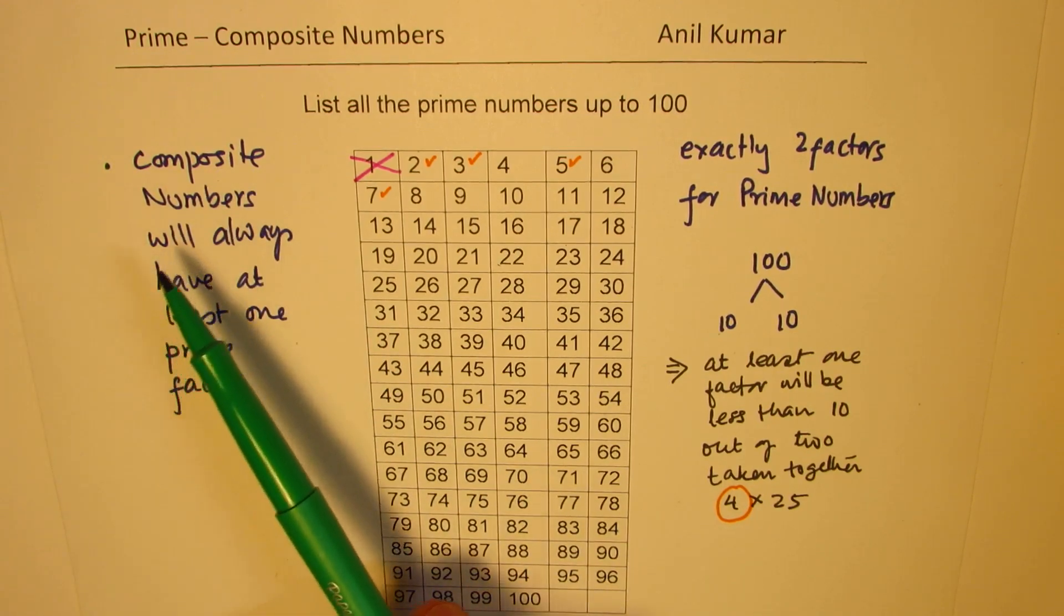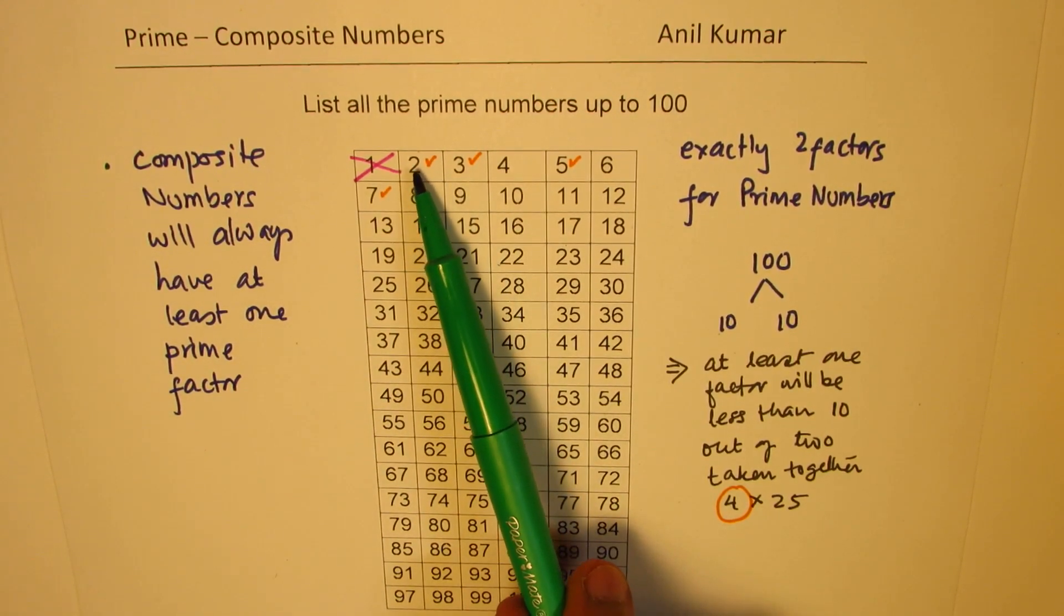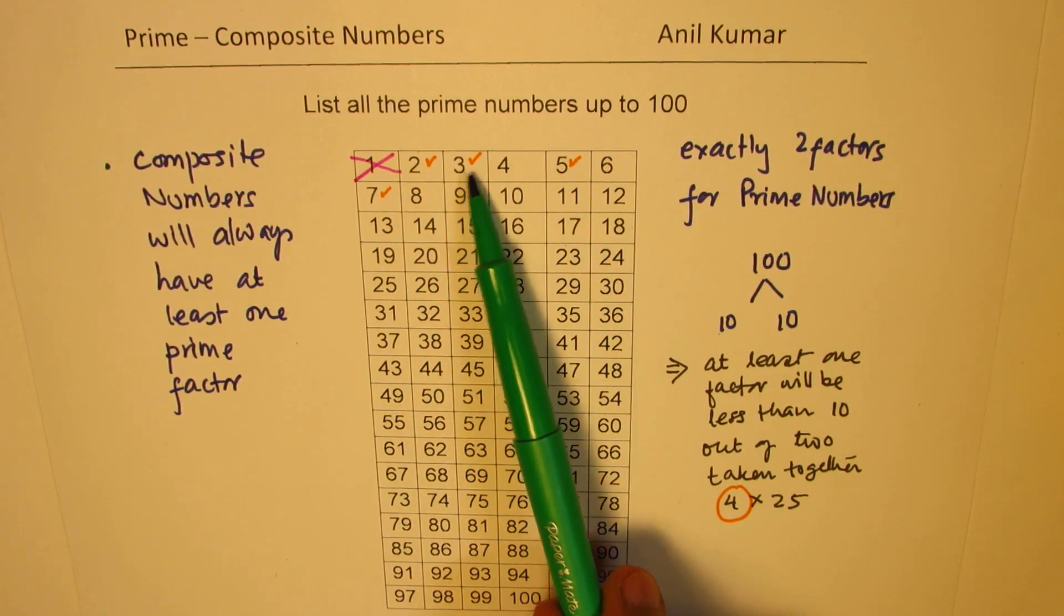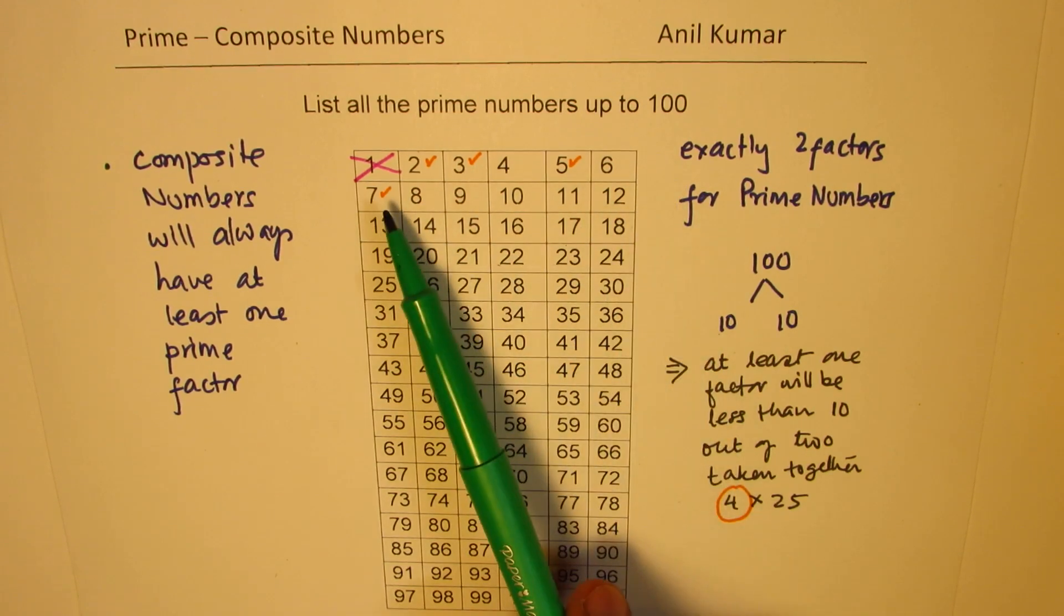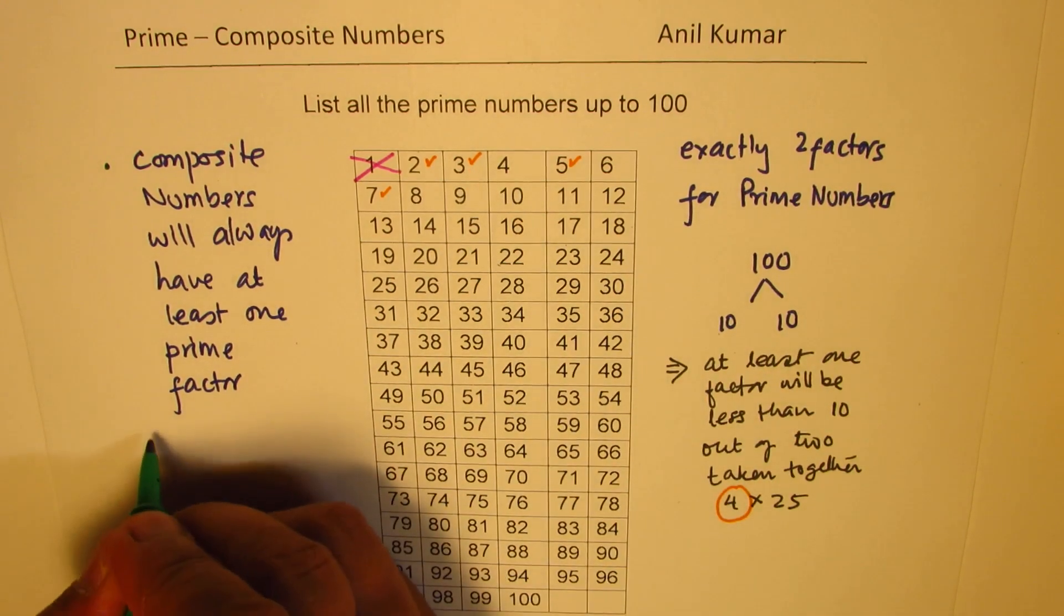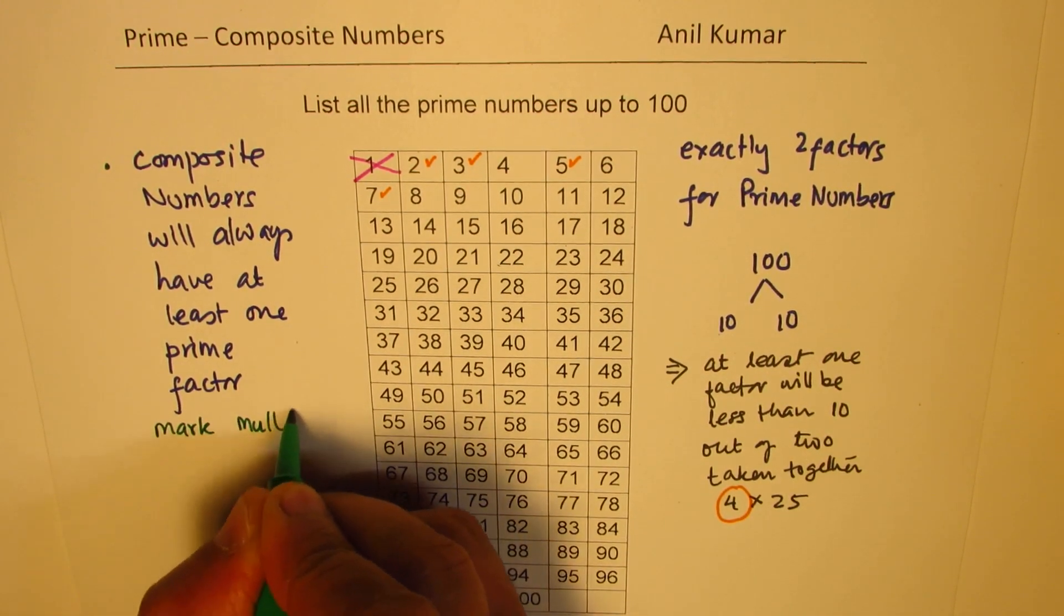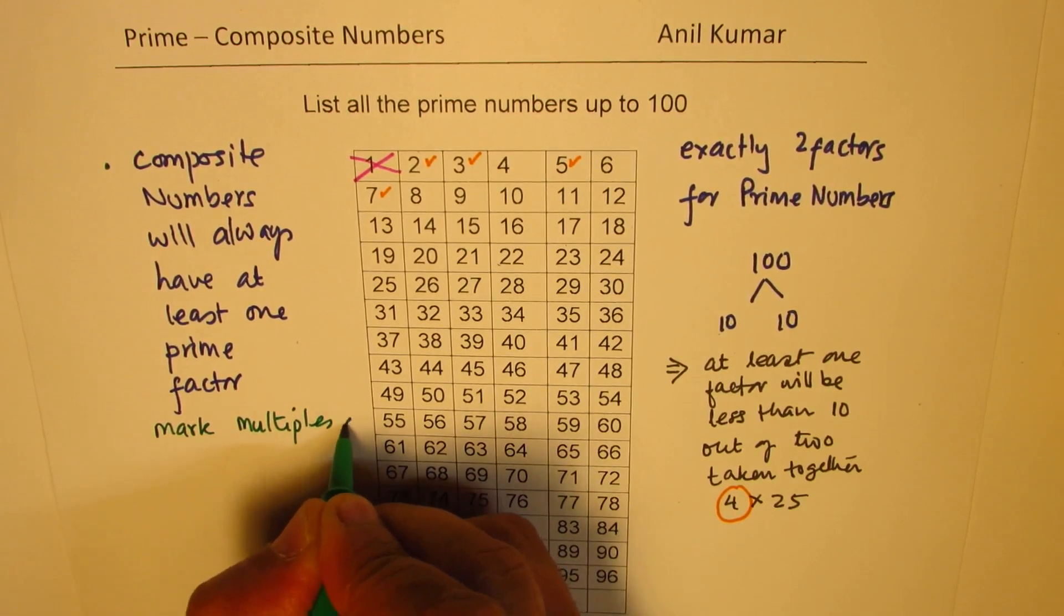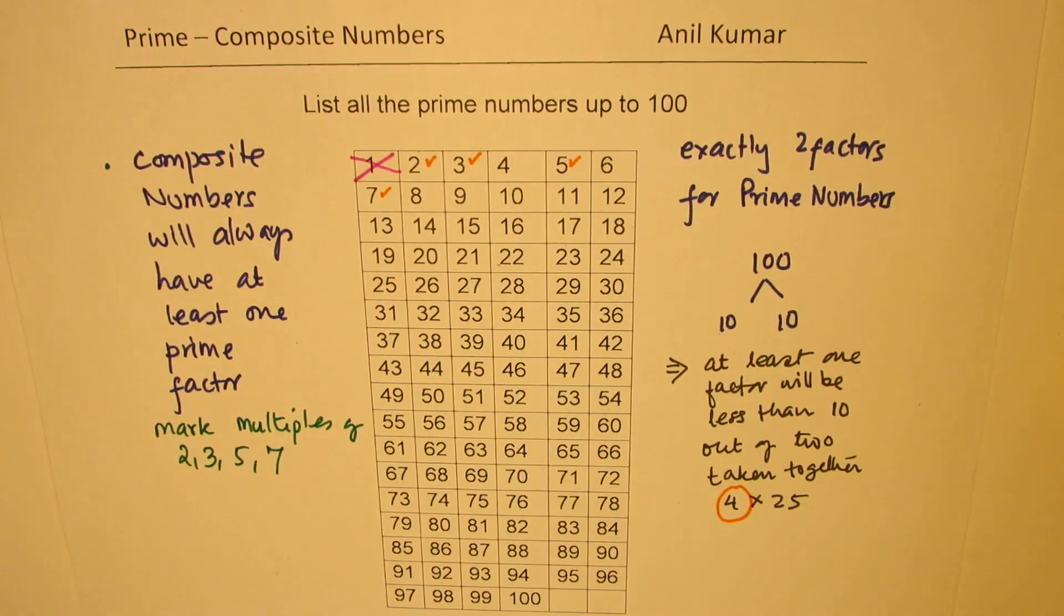Now, since composite numbers will have at least one factor, so if I take away all the multiples of these prime numbers, that means we have avoided all the composite numbers. So let's mark multiples of 2, 3, 5, and 7 in this chart. Do you understand? That is the whole criteria.